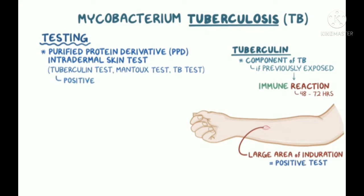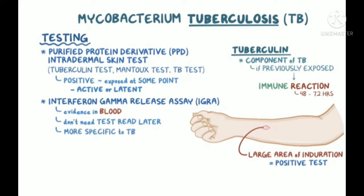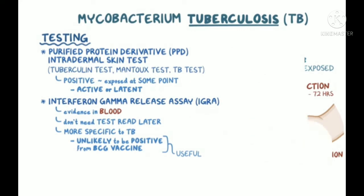A positive tuberculin test simply means the patient has been exposed at some point to TB — it does not differentiate between active and latent disease. As an alternative, there are also interferon gamma release assays, or IGRAs, which look for evidence in the blood of previous exposure to TB proteins. Since this is a blood test, you do not need to return to have the test read like you do with a PPD. The IGRA is also more specific to TB rather than other mycobacterial infections, and is unlikely to be positive as a result of having received the BCG vaccine, which protects against TB and is given to many children around the world to prevent disseminated TB.